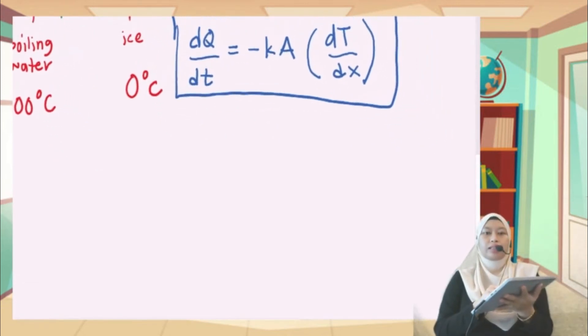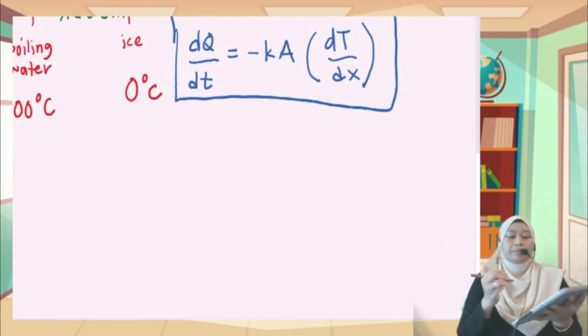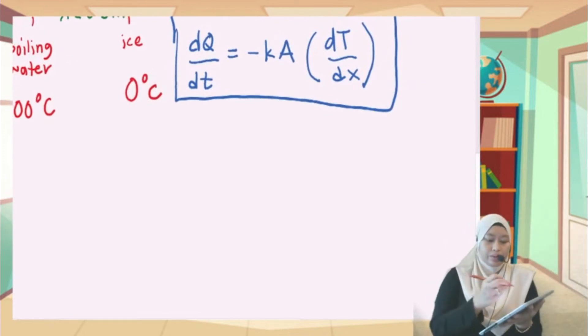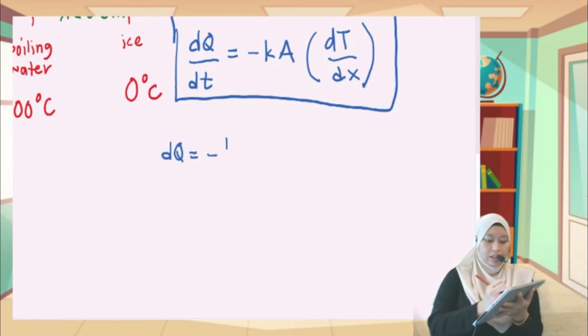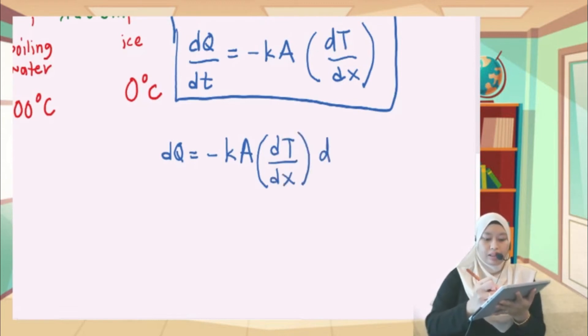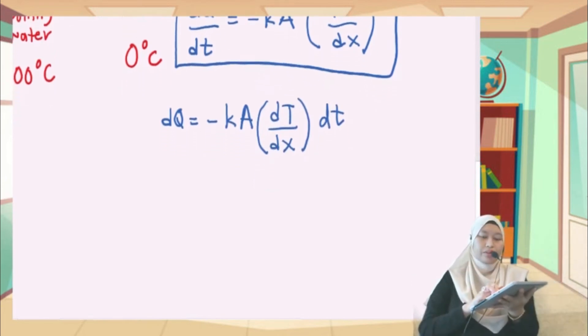So now since the formula is DQ over DT, we need to rearrange and make it DQ equals to... So I rearrange. DQ equals negative K A dT over x times dt. That's what we get after we rearrange.